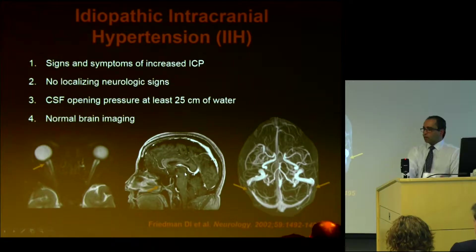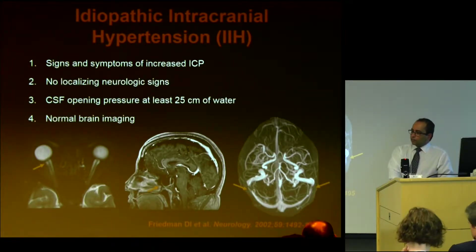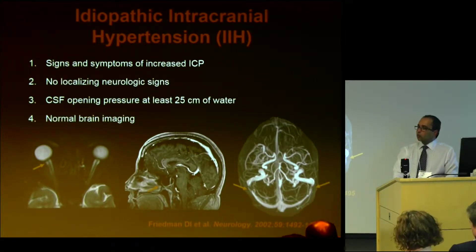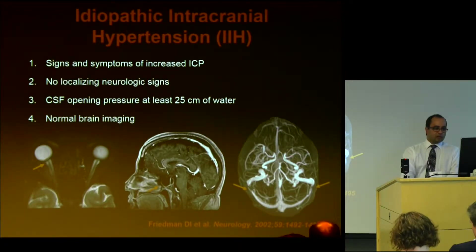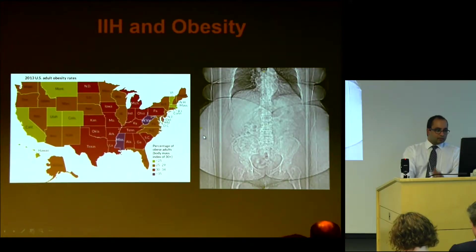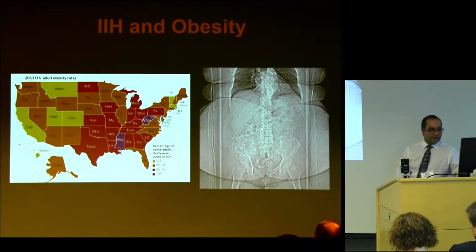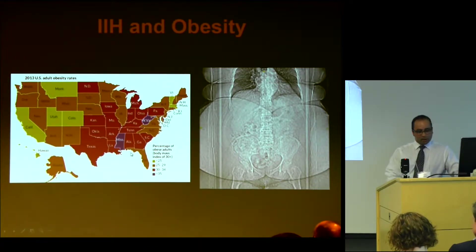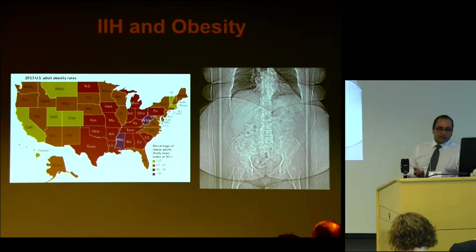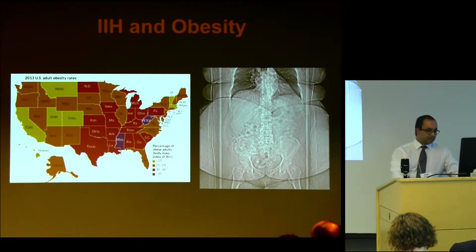We wanted to use IIH as a model because the brain is structurally normal — there's no mass or structural variation between patients. This is a disease related to obesity, and this is actually a map of obesity across the United States. We're in a red state with a high prevalence of this condition, which makes it relatively easy for us to find patients.